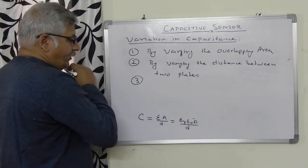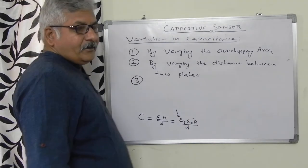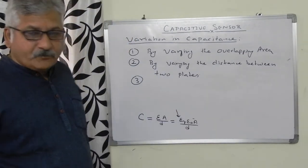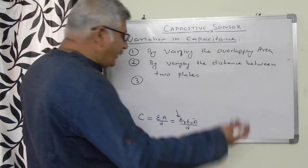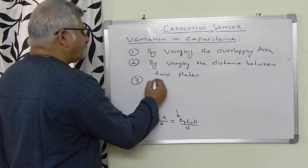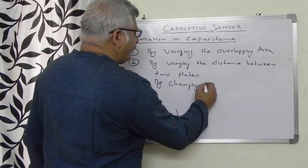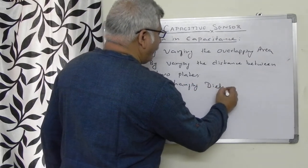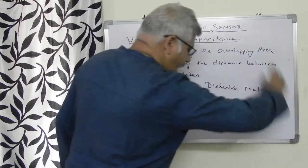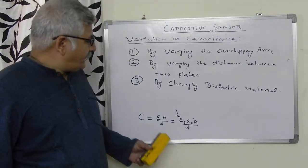Third, if we change the relative permittivity epsilon r — that is, if we change the dielectric material — then also the value of capacitance can be changed. So by changing the dielectric material, we can change the value of capacitance.